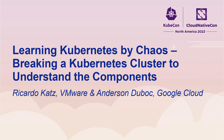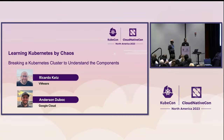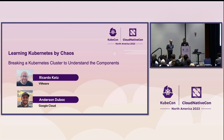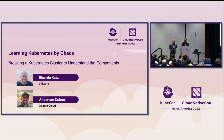Hi everyone, welcome in. We are going to be talking about Kubernetes with a bit of chaos. We are going to be breaking a Kubernetes cluster to understand its components. My name is Ricardo. I work at VMware. I develop Ingress-nginx, but I'm not going to speak about Ingress-nginx. Don't ask me about CVEs here. And I like Legos, Star Wars, and a bit of chaos as well.